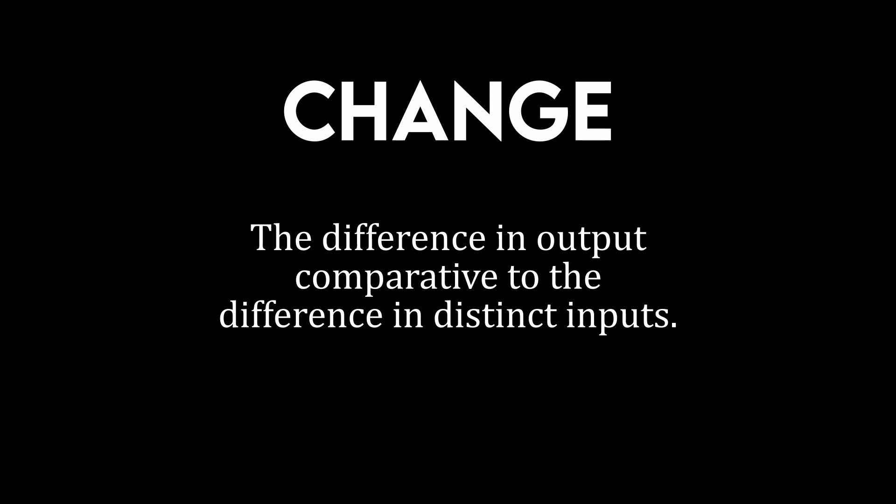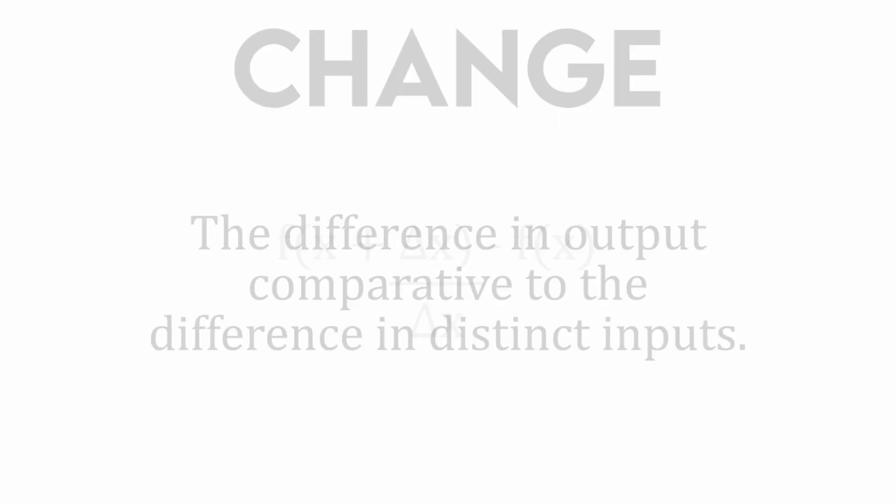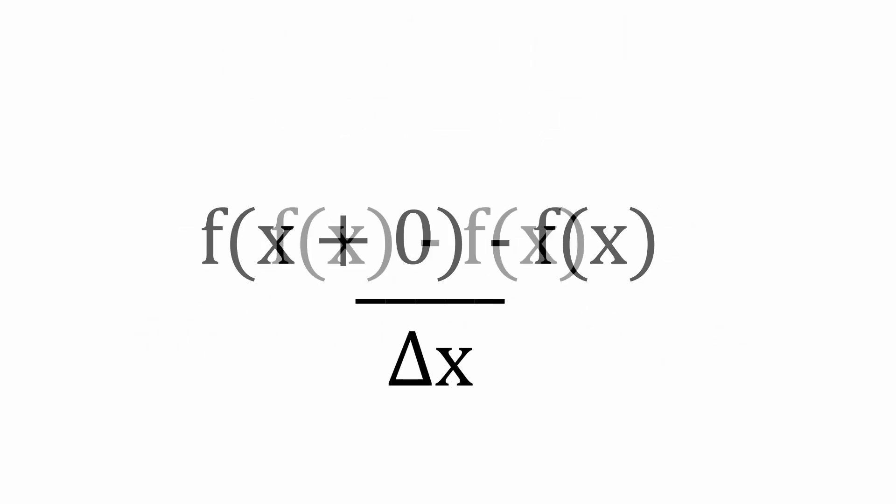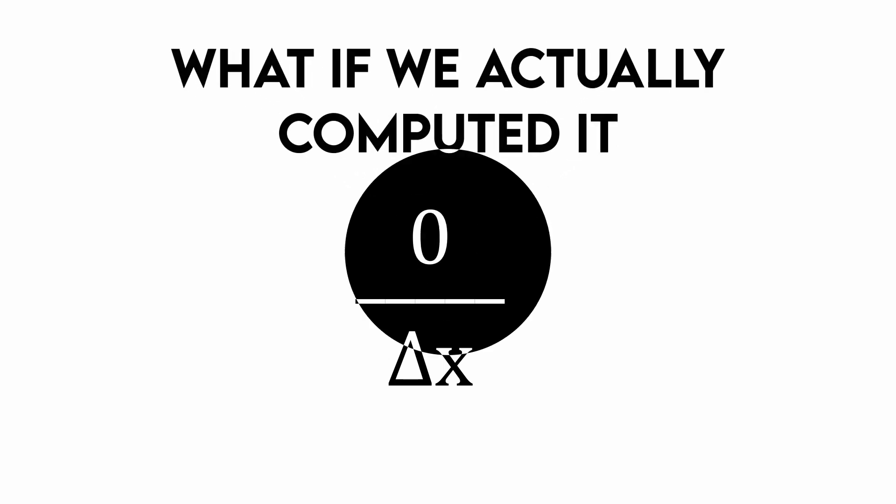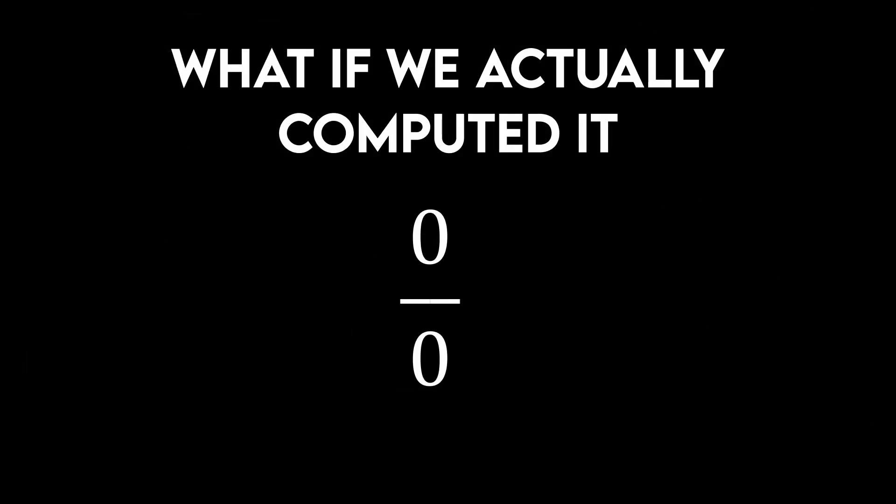How do we find the change at delta x equals zero? On one hand, it should be zero, since the input hasn't changed. But what if we actually computed it? Well, we can't divide by zero, so it seems like we're hopeless.